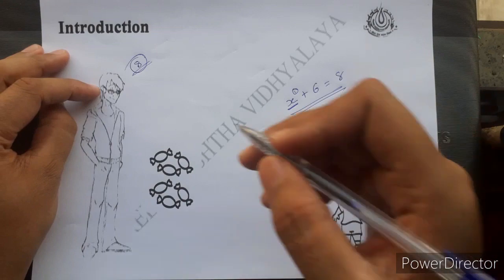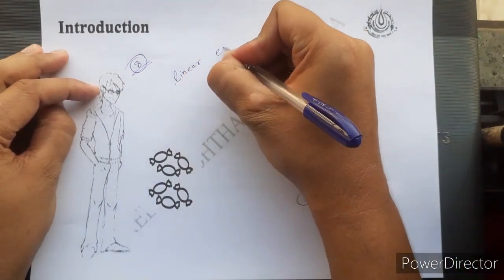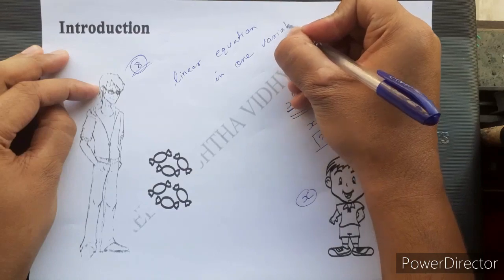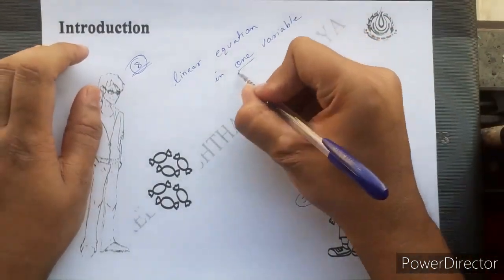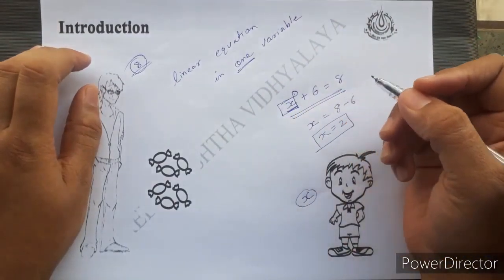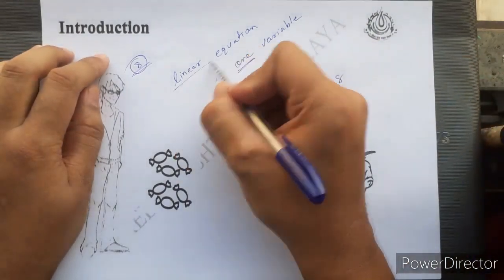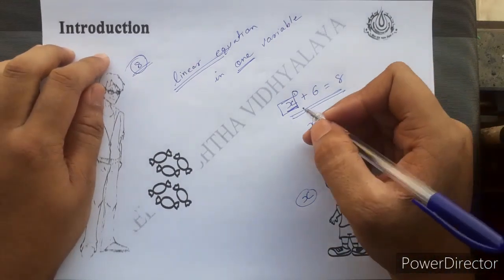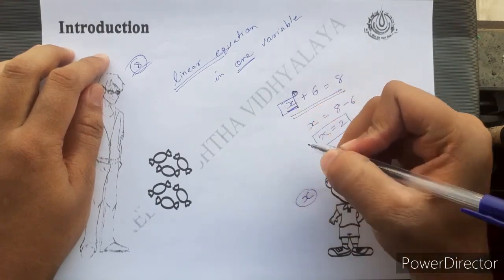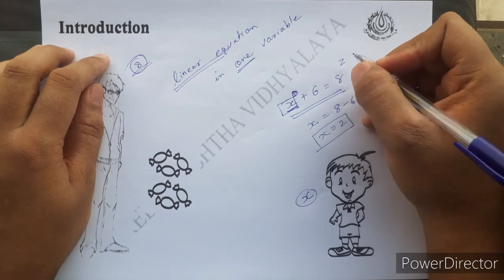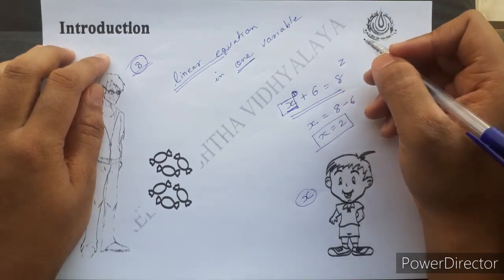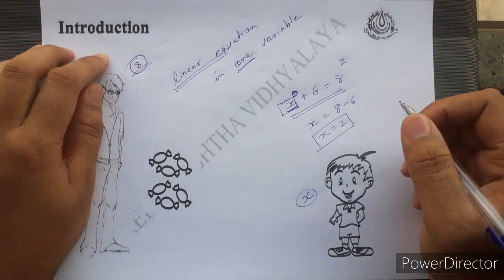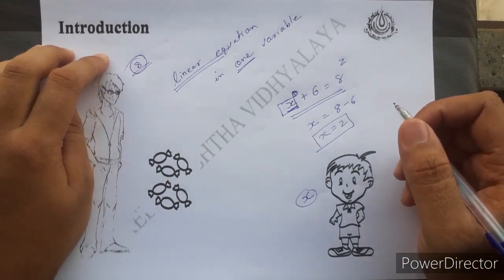Now, the term '1 variable' — we are using here the expression Linear Equation in 1 variable. The '1' stands for x, because here we are using only a single variable, that is x. For Linear Equation, how do we identify whether an equation is linear or quadratic? Here, x has a degree of 1. If you write any alphabet without mentioning a degree, it automatically has degree 1. Remember that.